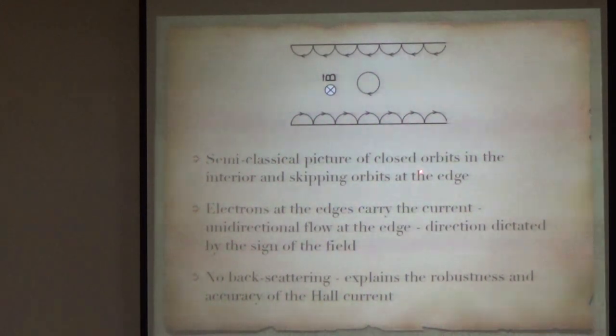Semi-classically, you can explain this by thinking of closed orbits in the interior. You have a magnetic field perpendicular to the plane, so in the presence of a magnetic field, the electrons will form closed orbits. If you look at a finite size sample, then at the edges of the sample, the electrons can only go in one direction.